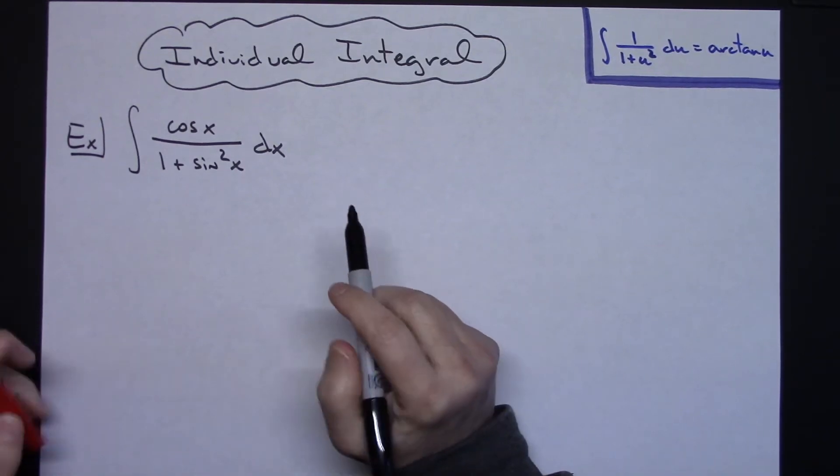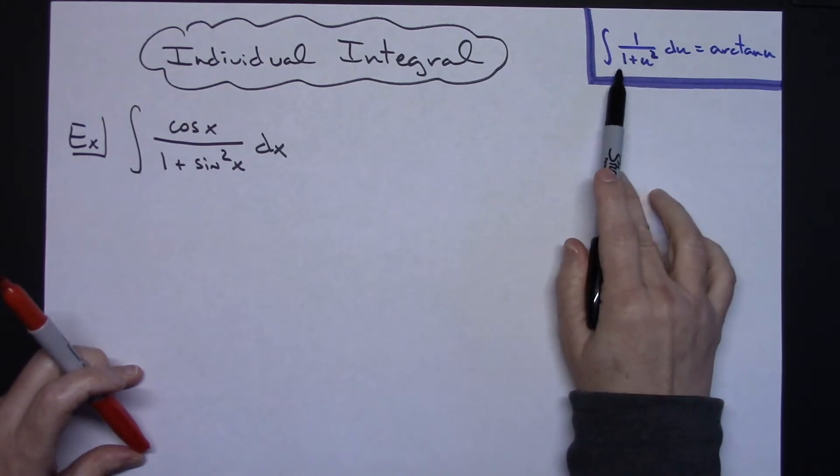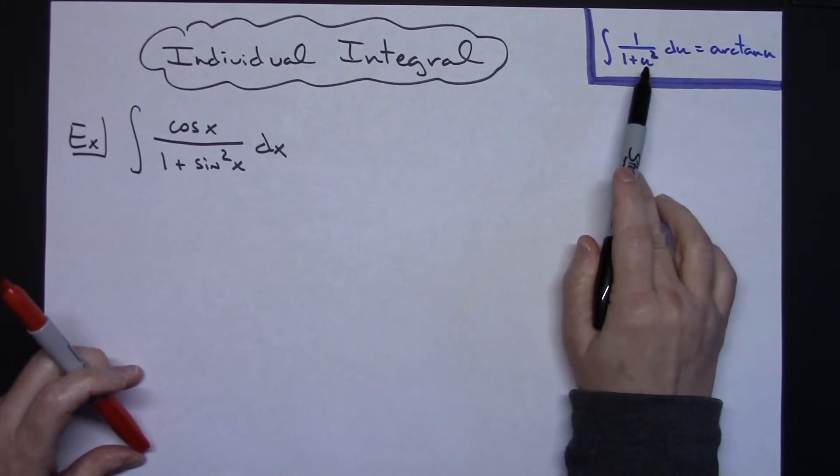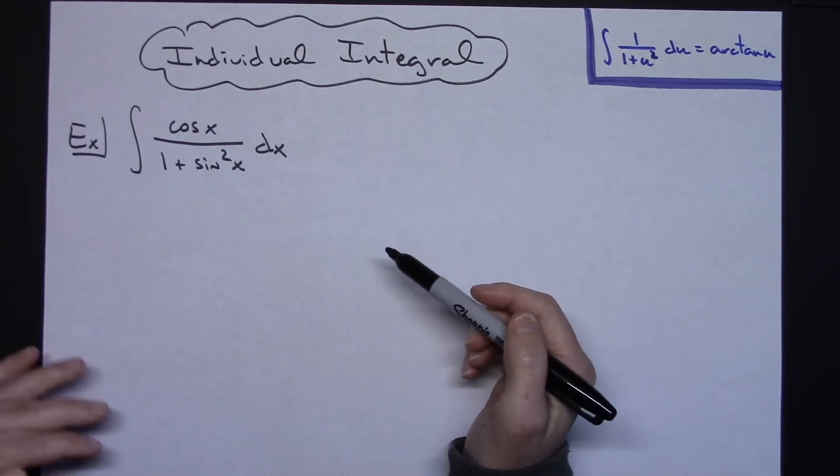In this video I'm going to work on an individual integral. You do have to have the integral of 1 over 1 plus u squared memorized as being arctan u, because that's where we are going to ultimately go with this one.